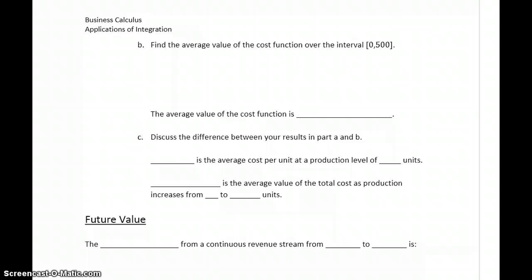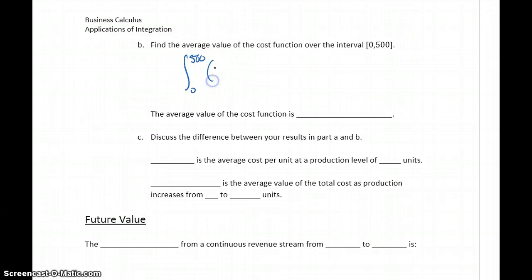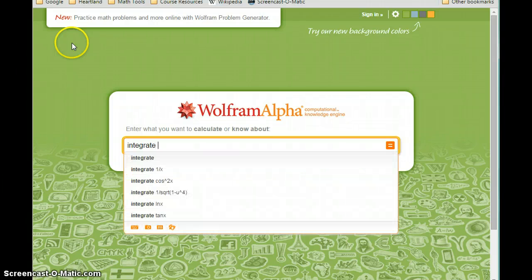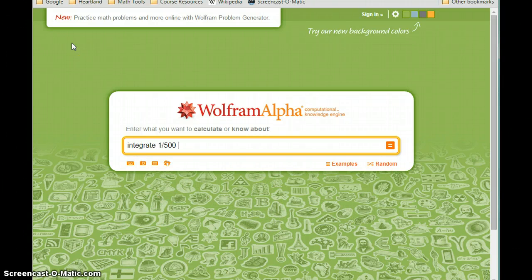In part B, we want to find the average value of the cost function over the interval from 0 to 500. That means we want to integrate from 0 to 500 our cost function, which is $70,000 plus $600X dx, and then multiply by 1 over the difference of our upper and lower bounds — 500 minus 0, or just 1 over 500. Using Wolfram Alpha, we integrate 1 over 500 times (70,000 plus 600X) for X equals 0 to 500.